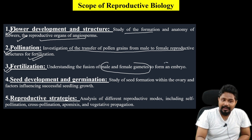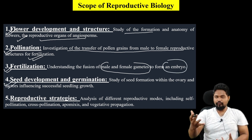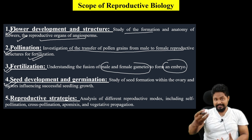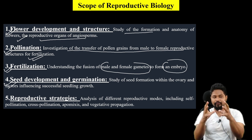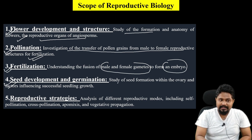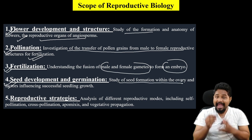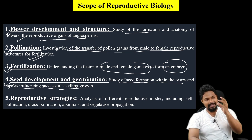What is an embryo? Next is seed development and germination. Seed data can develop from the ovary — the study of seed formation within the ovary and key factors influencing successful seedling growth.